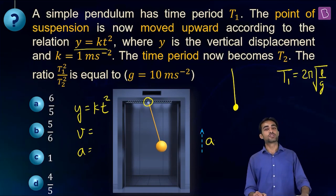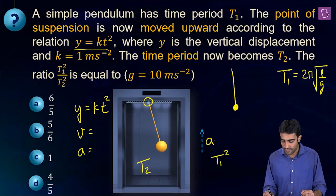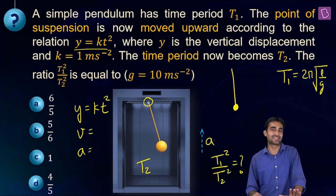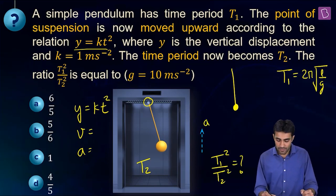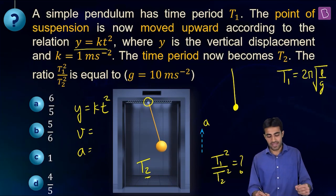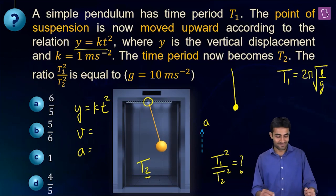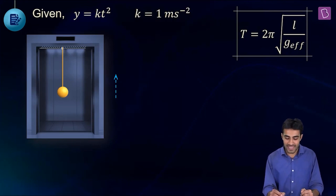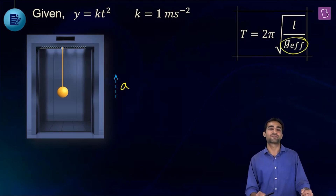The new time period becomes t2, and we must find the ratio t1²/t2². We use the formula: time period = 2π√(L/G_effective), which applies even when the setup is accelerating, by substituting G_effective.